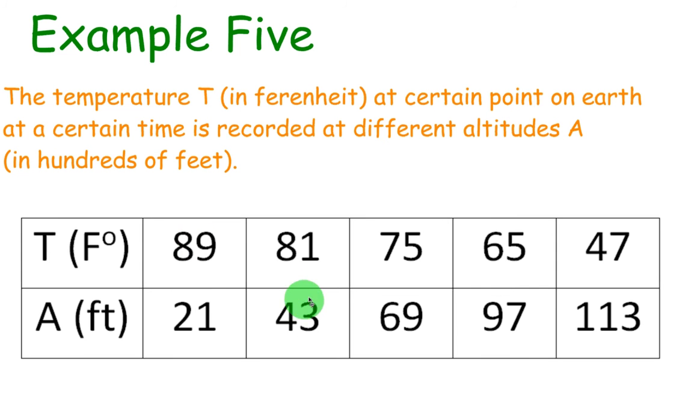At 4,300 feet, it drops to 81, all the way over to 11,300 feet. It dropped down to 47 degrees. So you can see as altitude goes up, temperature goes down, and vice versa.